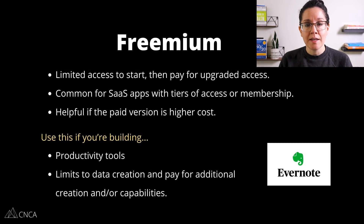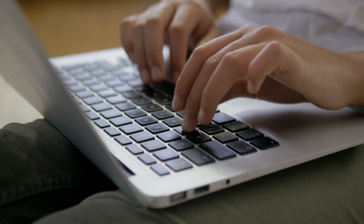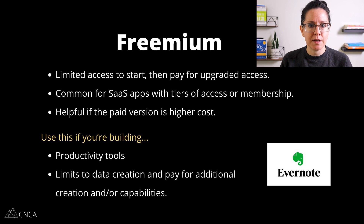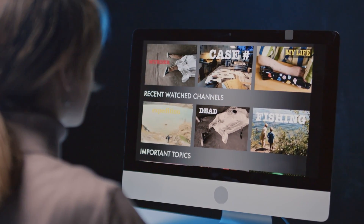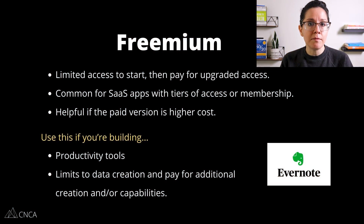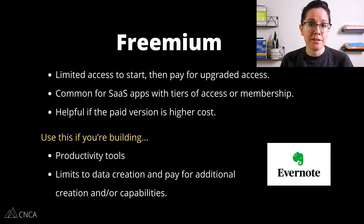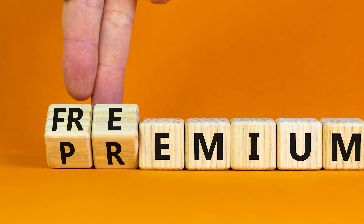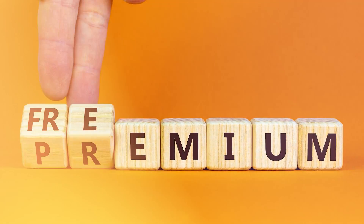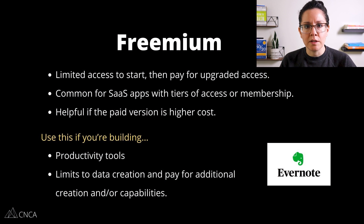The freemium model is one where you give your users limited access to your application's features and capabilities. They could stay on the free version forever if they wanted. But in order to get full feature access or more premium access with raised limits, they will upgrade and make a payment — either a one-time payment or enter into a subscription. This is typically common with SaaS applications and tools. It's very helpful to offer this model where you allow users to get a taste of what they can do in the application, especially if the paid version is higher cost. The freemium is not the same as a trial — you're not going to automatically upgrade them or cut off their account after a period of time. There's always a free version, but extended access, lifted limits, more data generation, or additional premium features come with the upgrade.